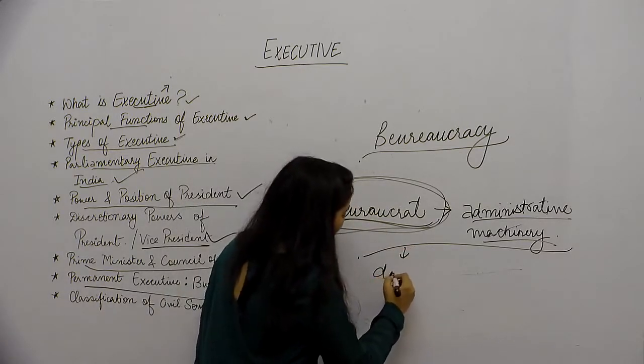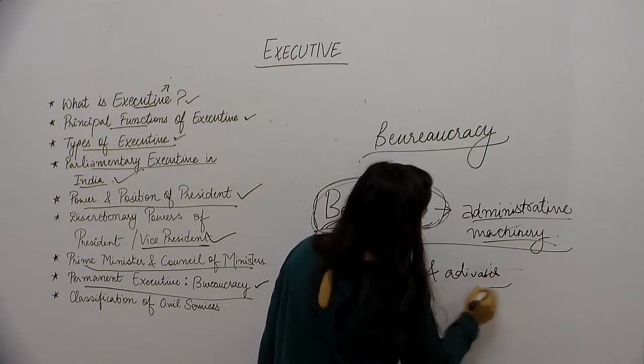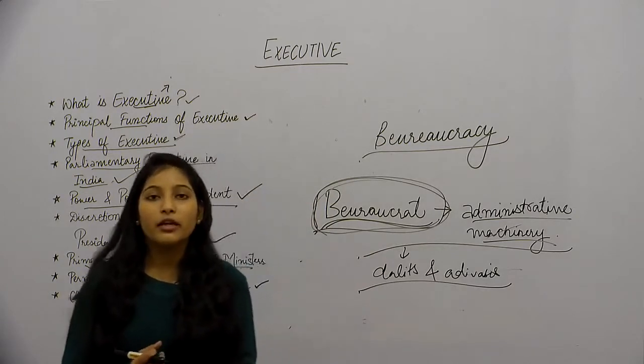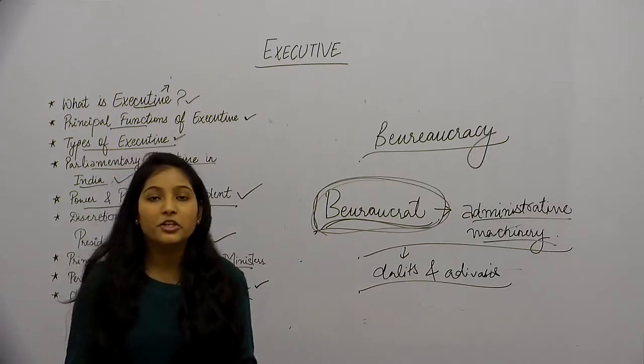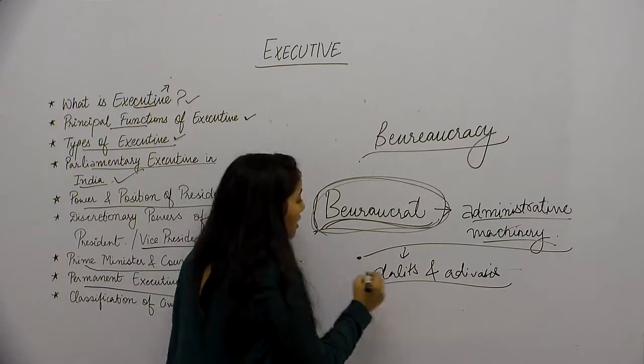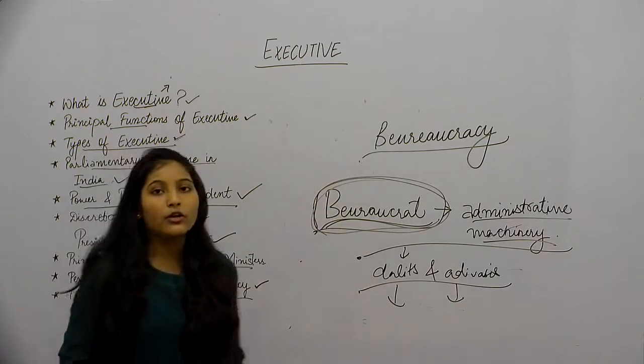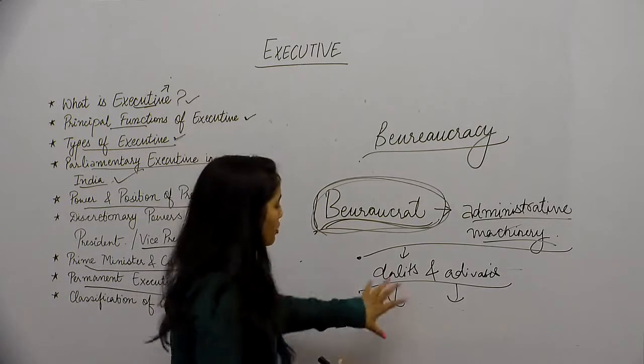जो dalits हैं and आदिवासी communities हैं, उन लोगों को भी chance दिया जा रहा है कि वो अपने आपको खड़ा कर सकें in the elections of bureaucrat, ताकि वो लोग अपनी communities की welfare के लिए काम कर सकें. Bureaucrat का मतलब क्या होता है? जो backward categories हैं उनको सुधारना.